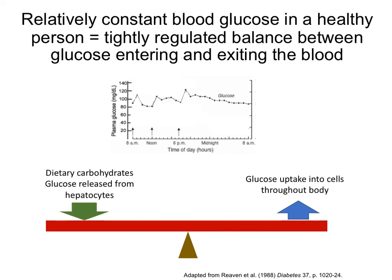So far we've seen that we need to regulate the concentration of glucose in our blood to a relatively narrow range, between about 70 and 100 mg per deciliter throughout the day. That means that our bodies have to be able to control how much glucose from dietary carbohydrates and the glucose released from the liver is very tightly balanced with the amount of glucose taken up from the blood into the cells of our bodies.